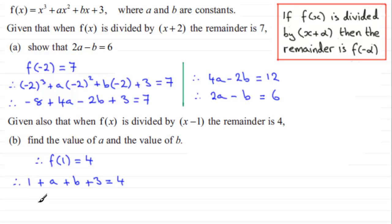And if we tidy this up we therefore have a plus b equals, well 1 add 3 is 4, 4 take away 4 is 0.